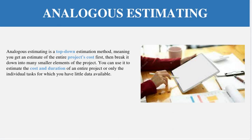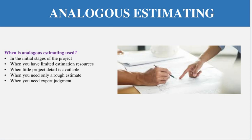We normally use analogous estimation when we are in the initial stages of a project. Initial stages means you are in the initiation phase — discussing with the customer that you need an e-commerce solution, and you recommend that six to seven months and a certain cost is required. Secondly, we use it when we have limited estimation resources and don't need drill-down level estimation — just a rough order estimate. At this early stage, project details are very limited; scoping and deliverables are available only at a high level.